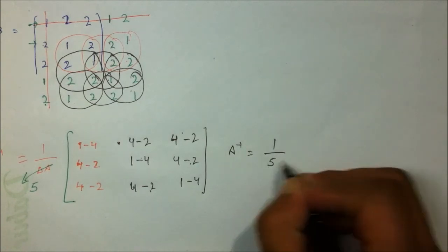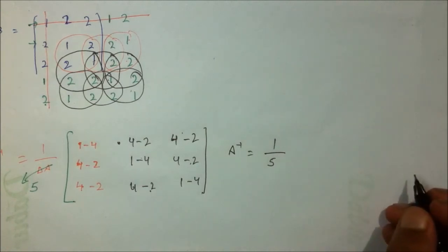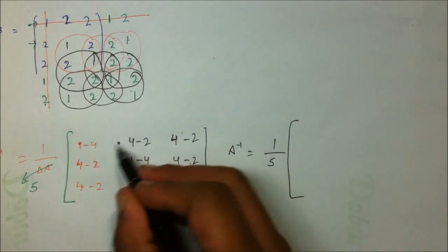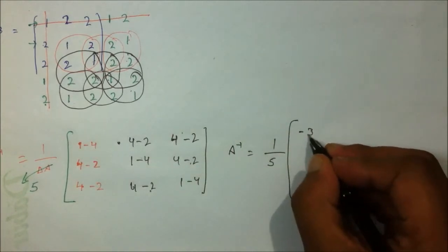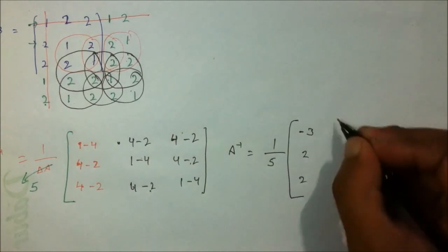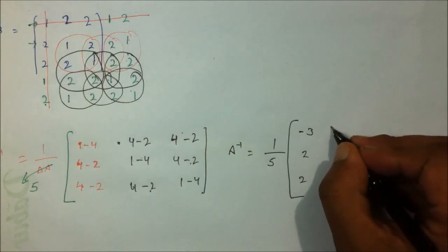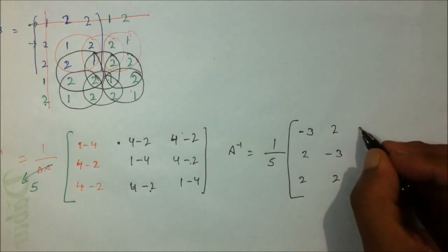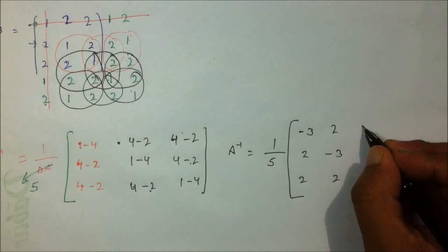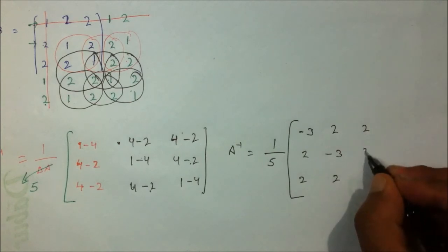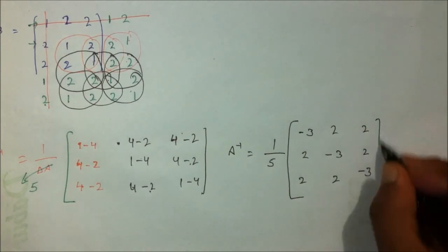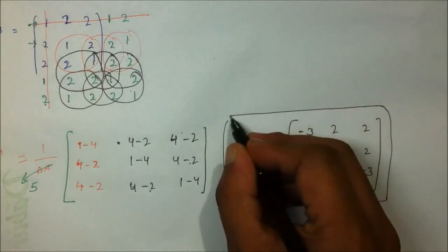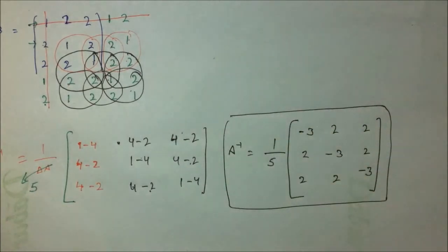The proper solution comes out to A inverse = (1/5) × [[-3, 2, 2], [2, -3, 2], [2, 2, -3]]. This is the A inverse of the matrix, obtained simply by this shortcut trick.